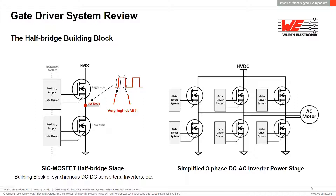In a synchronous buck converter, the devices are turned on and off alternately and a square-like waveform is generated in the switch node, featuring very high dV/dt on the rising and falling edges depending on how fast the transistor devices are switching. In reality this is more of a trapezoid-like waveform. Since silicon carbide devices can switch much faster, the dV/dt generated in the switch node during switching transitions will be dramatically higher, causing challenges which the gate driver system will have to deal with and overcome.